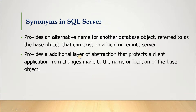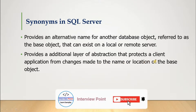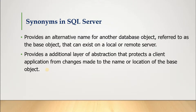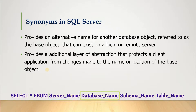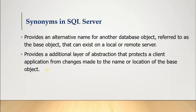A synonym provides an additional layer of abstraction that protects a client application from changes made to the name or location of the base object. For example, if there is a table on a remote server and you are on a local machine, you need to provide a server name, schema name, and table name to access it. To reduce this complexity, we give a synonym to that object so we can remember and access it easily.